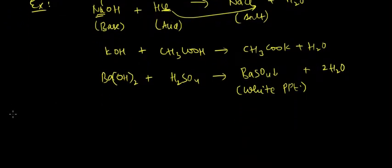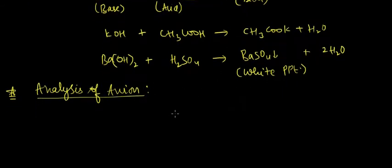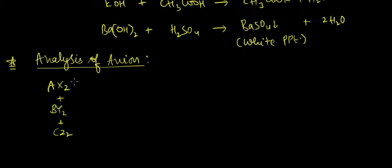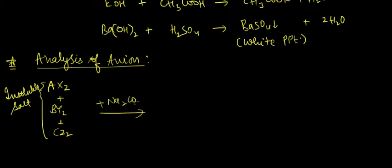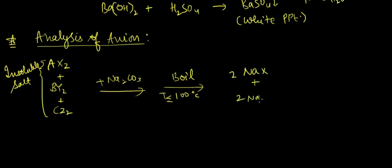Next, let us see the analysis of anion. We have AX2 plus BY2 plus CZ2 which are all insoluble salts reacting with Na2CO3, and then we boil it at temperature less than 100 degrees Celsius. So we get 2NAX plus 2NAY plus 2NAZ.